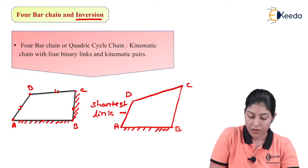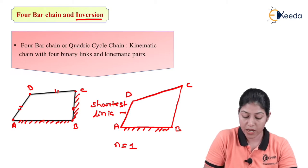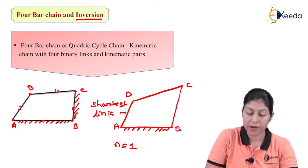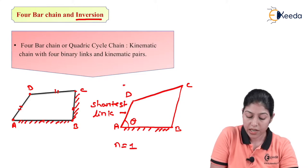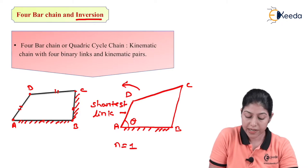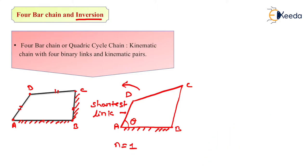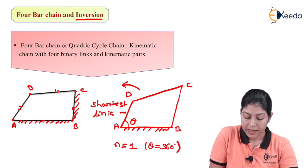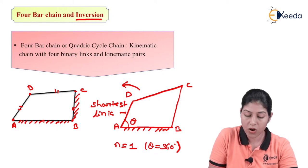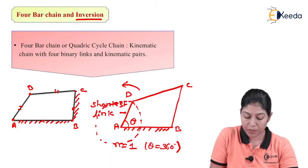In this 4-bar mechanism, the number of degree of freedom is 1, and this is defined by one variable theta. The shortest link generally moves with angle theta and it can complete one revolution. If theta equals 360 degrees, this crank — or this shortest link, which is also called the crank — will complete one circle or one revolution.